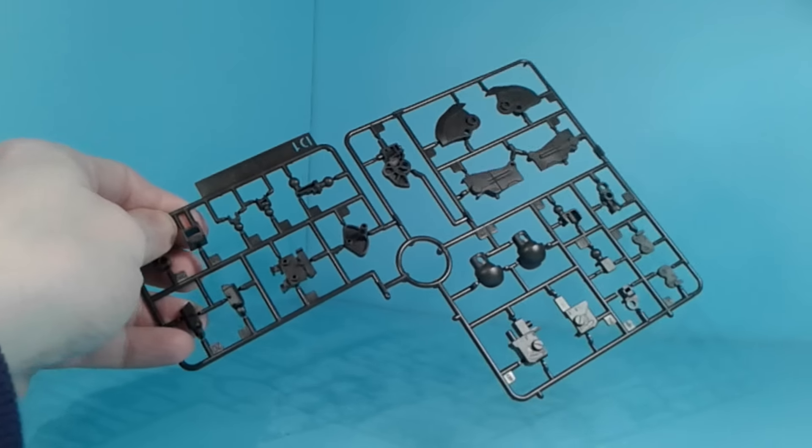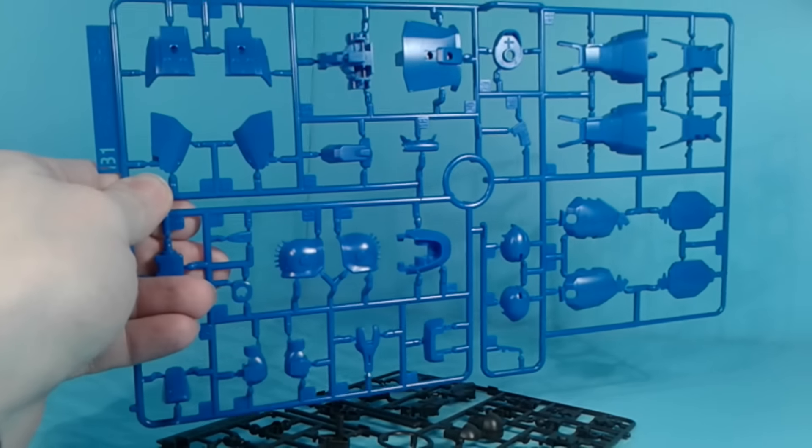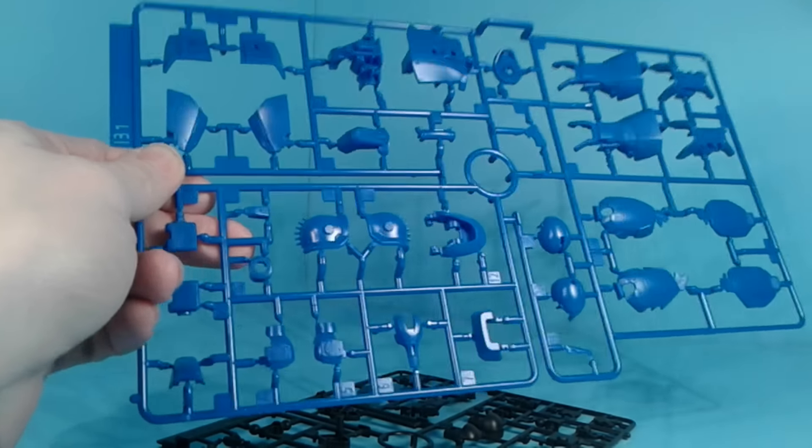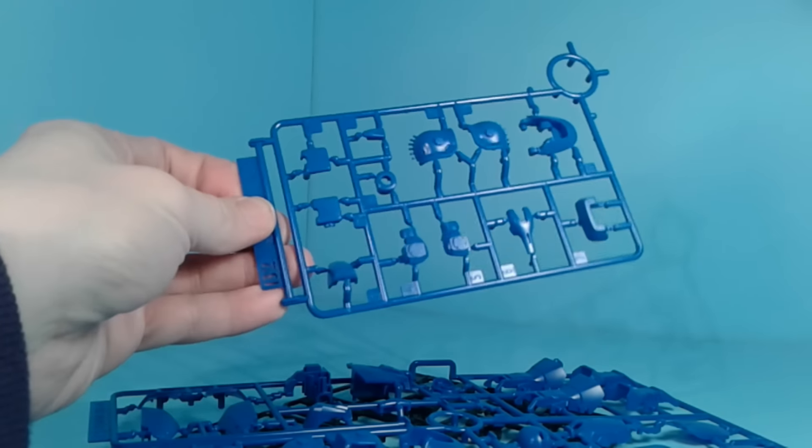So let's see what we got here. Parts that we've pretty much seen before with other Origin models. And I gotta say, I really like the blue. I feel it's more of a vibrant blue than other Ramba Ral customs.